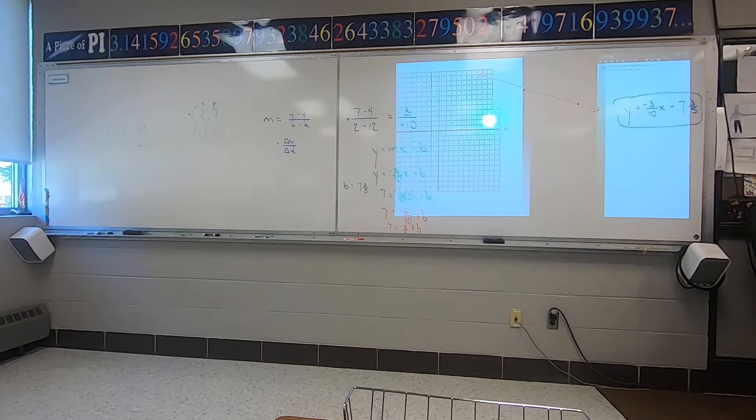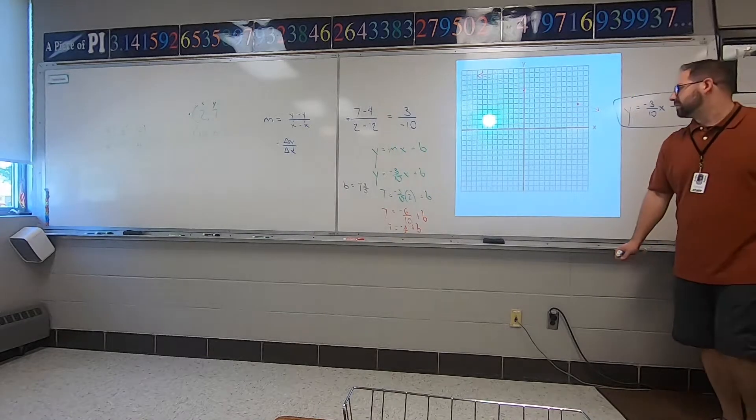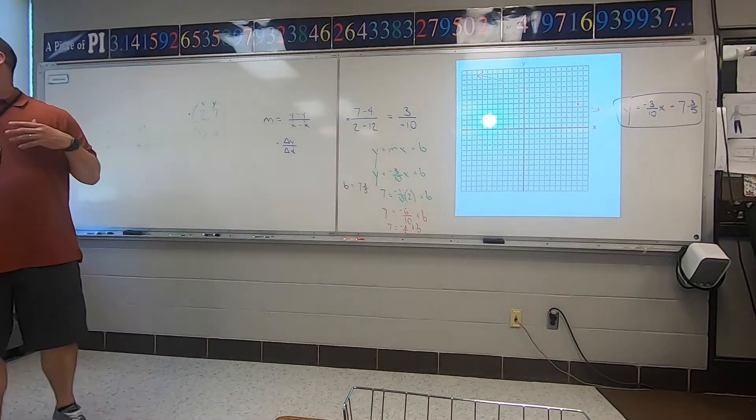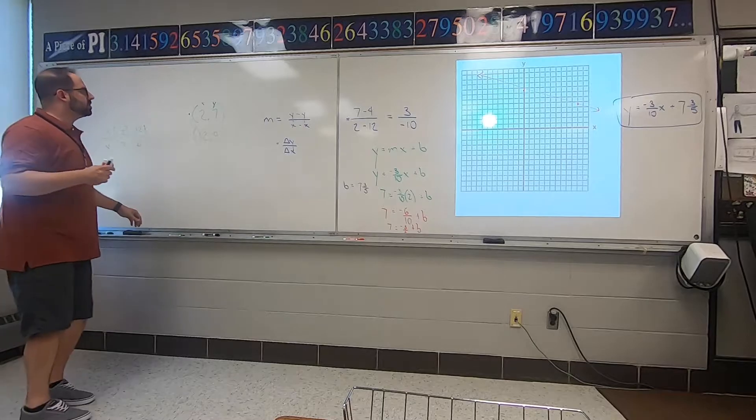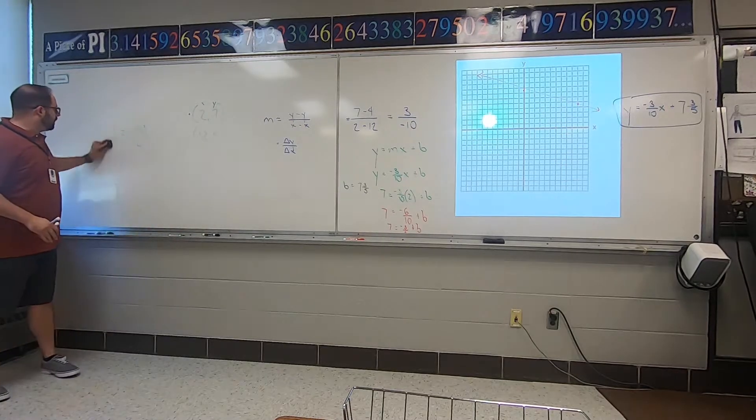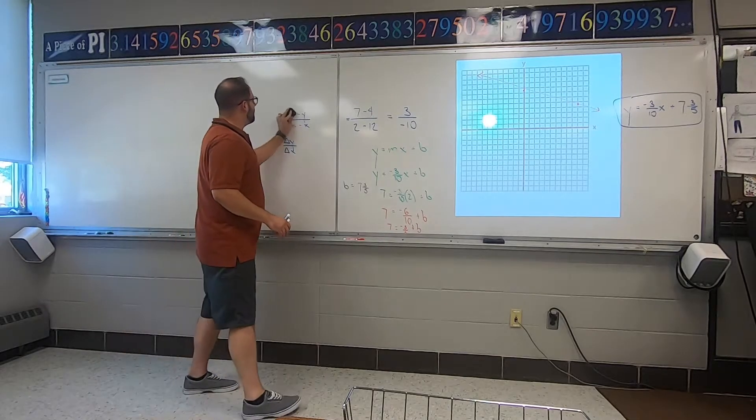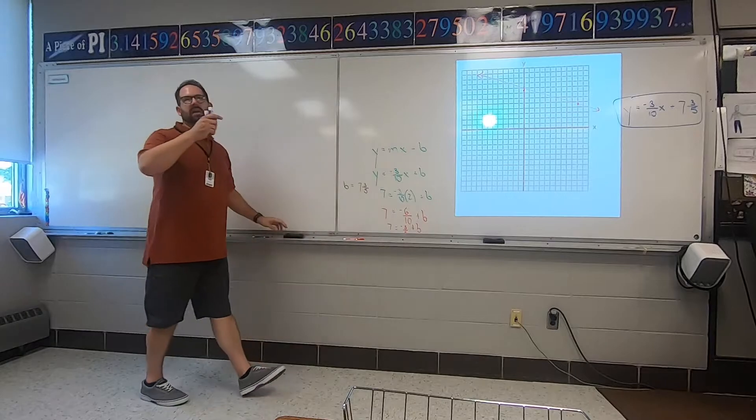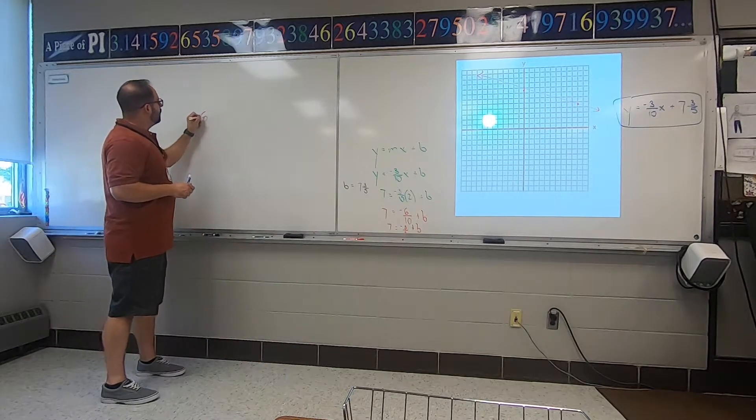Because all I needed in that original formula is I needed my slope, which we found was negative three-tenths, and I needed that B number, which is the Y-intercept number. So I just went back and I plug them both in, and then I can go draw. And you got that out of the coordinates. Okay. You got that out of the coordinates. Yes. You get that from there.